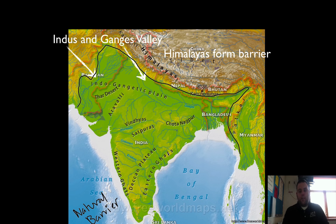Another thing to look at is, if there are rivers, where is the water coming from? A lot of these tributaries run from the Himalayan mountains. So we have a lot of snowcap melting going on that floods the river valleys.